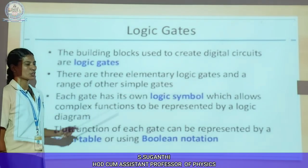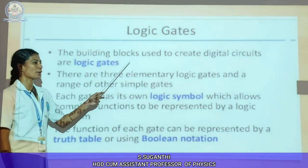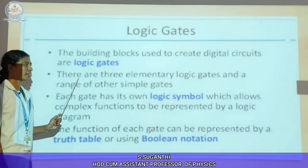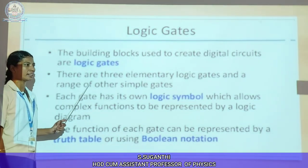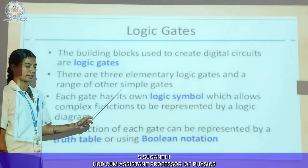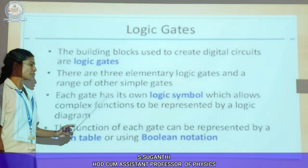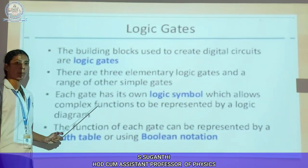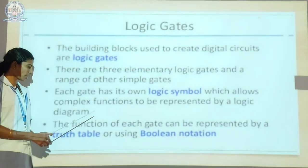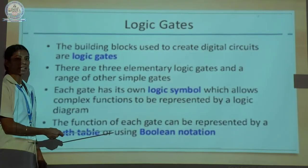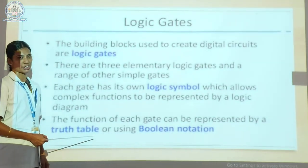Next one is logic gates. Logic gates are used to create a large number of logic circuits. There are three elementary basic logic gates: AND gate, OR gate, and NOT gate. Each gate has its own logical symbol which allows complex functions to be represented by a logical diagram. The functions of each gate can be represented by a truth table or using Boolean functions.